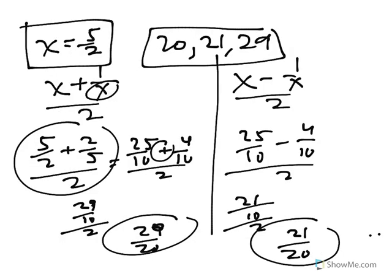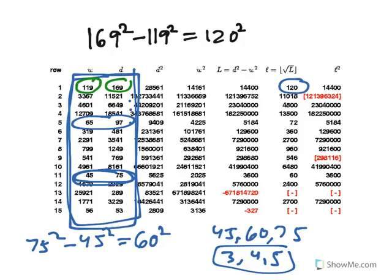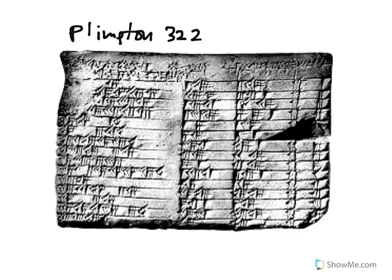So, what you should be able to do, though, is you should be able to follow through this process. If you're given an x value, you should be able to come up with the three values. It's also good to know that this is all inspired by the famous Plimpton 322 tablet.